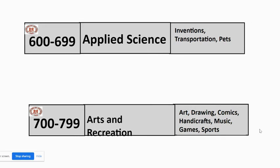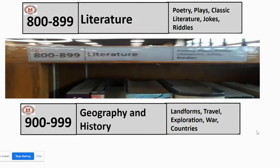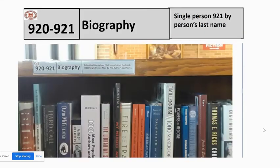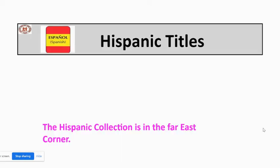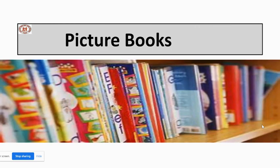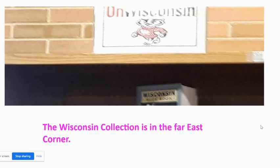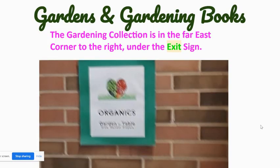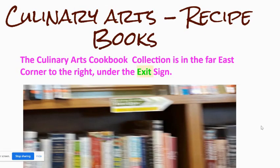The 700s to 799s are going to be up at the top on the balcony. Biographies are down below on the east side. Hispanic titles are underneath the prom picture — this very old prom picture — and they have a red and yellow spine label. Picture books are right next to them if you go to the right. There's also a Wisconsin collection in that area — you'll see our little Bucky Badger. Opposite the Spanish books and the children's books is a collection of gardening books and also culinary books, which are books about recipes.